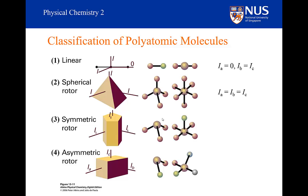The next kind of polyatomic molecule is what we call a spherical rotor. It could be an octahedral molecule or a tetrahedral molecule. These are all spherical rotors because their moments of inertia around the three axes are the same. For an octahedral molecule, that is obvious. For a tetrahedral molecule, it is slightly less obvious.